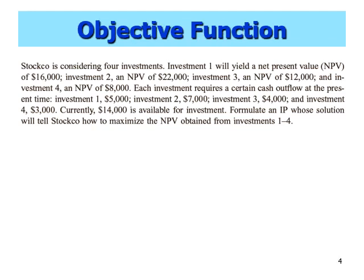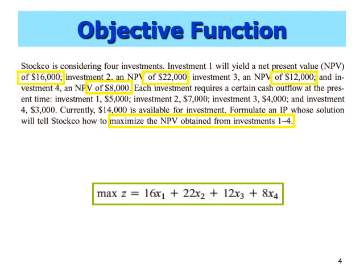To formulate an optimization problem, I usually start with the objective function — I find it the easiest. We are asked to maximize the NPV obtained from investments 1 to 4. Investment 1 gives us NPV $16,000; investment 2, $22,000; investment 3, $12,000; and investment 4, $8,000. So we can say: maximize z = 16x1 + 22x2 + 12x3 + 8x4.